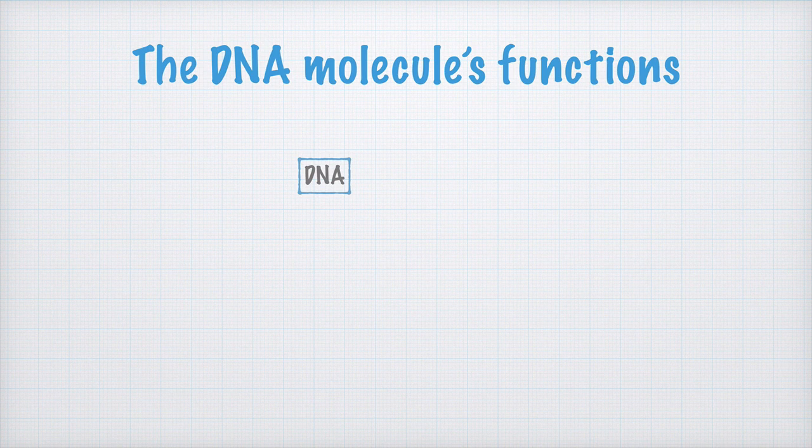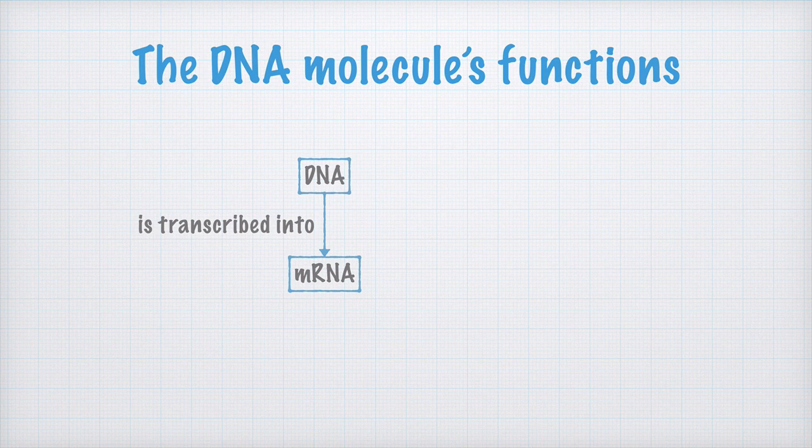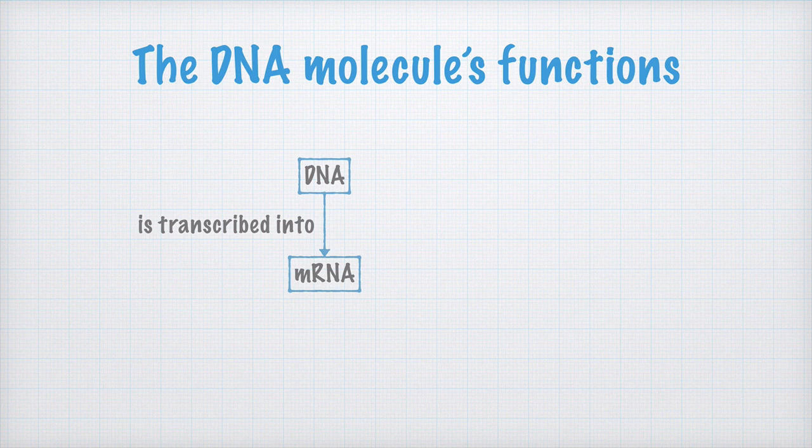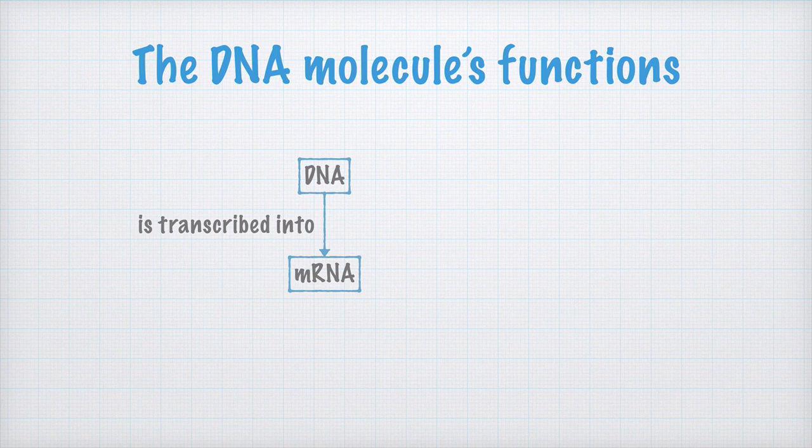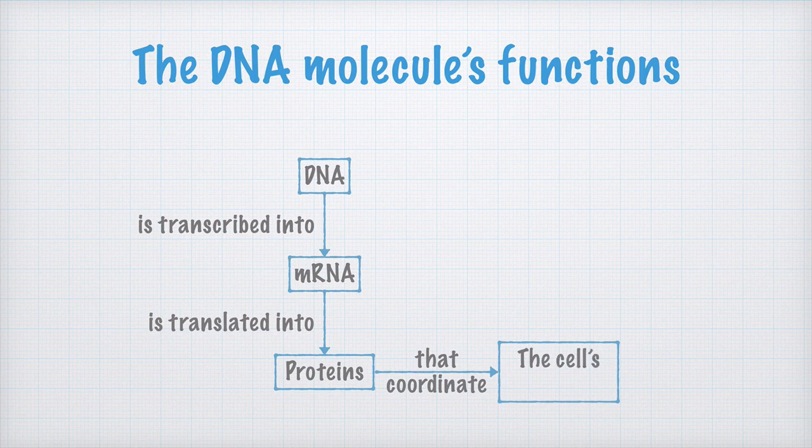These recipes for proteins are first transcribed into RNA or even mRNA. This simply means that the information stored in the DNA molecule is rewritten in the form of RNA instead. This information is then translated into proteins, and the proteins coordinate almost all of the cell's functions, for example, replication of the DNA molecule itself.